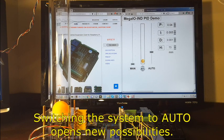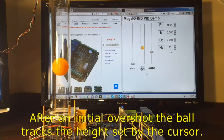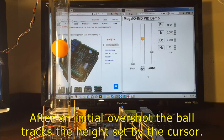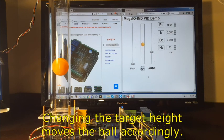Switching the system to auto opens new possibilities. After an initial overshoot, the ball tracks the height set by the cursor. Changing the target height moves the ball accordingly.